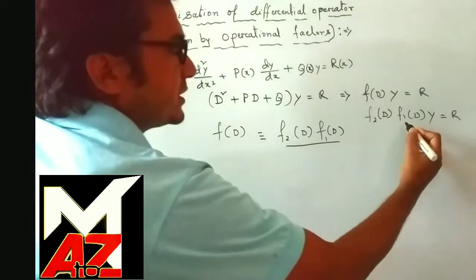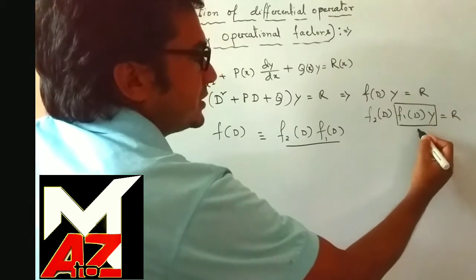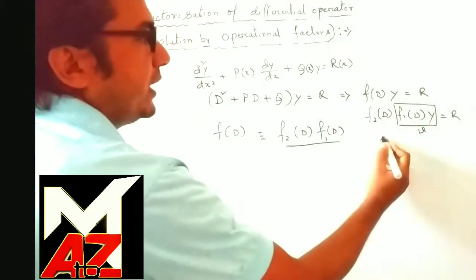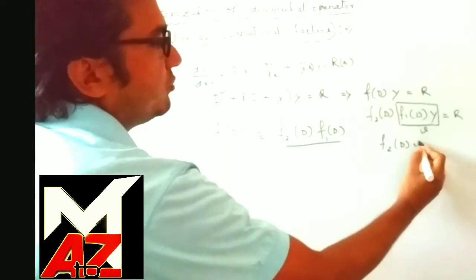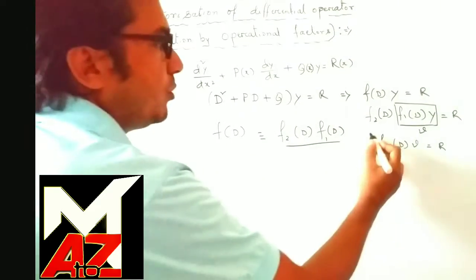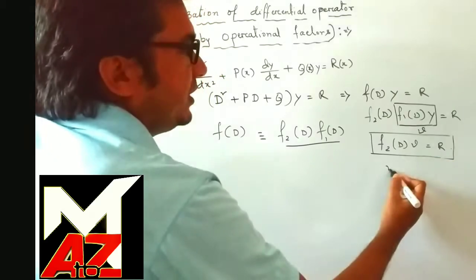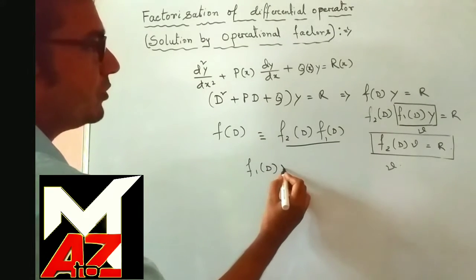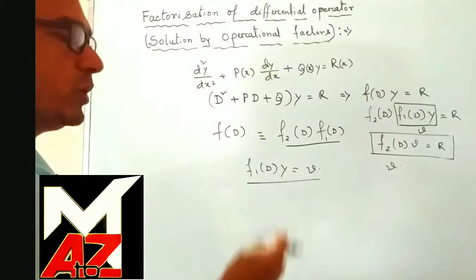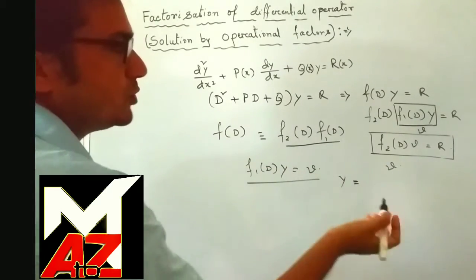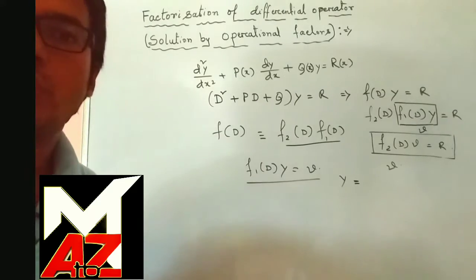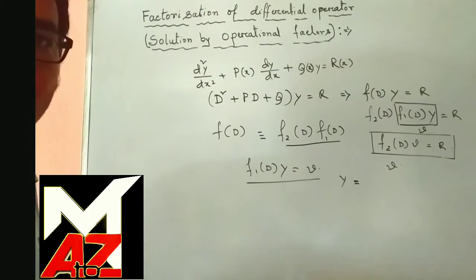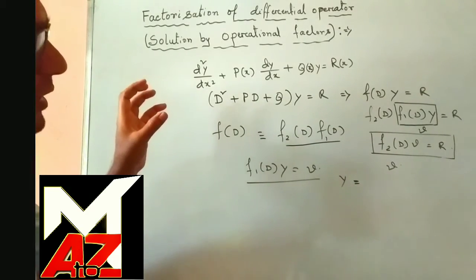We first let f₁(D)·y = v. Then we can write f₂(D)·v = r. From this equation we can easily find v, and then putting the value of v into the first relation we can find y — that is, we can find the complete solution of the differential equation.